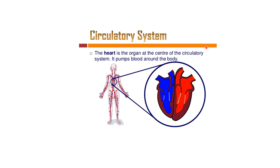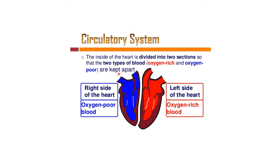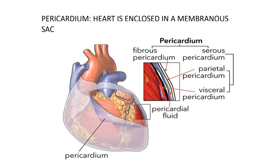Moving on to the circulatory system. The heart is the organ at the center of the circulatory system and it pumps blood throughout the body. There are two sides: the right side contains oxygen-poor blood (deoxygenated blood) and the left side contains oxygen-rich blood. The heart is enclosed in a membranous sac known as the pericardium. The pericardium is of two parts: fibrous pericardium and serous pericardium. The serous pericardium is again divided into parietal pericardium (outer covering) and visceral pericardium (inner covering). In between these two there is pericardial fluid.